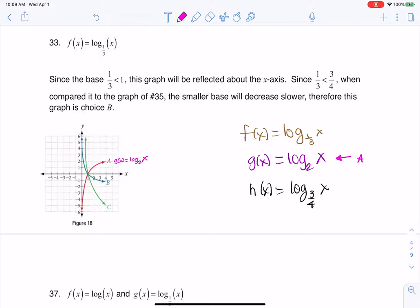And then we have two other graphs where we have a base of one-third and a base of three-fourths. So because those numbers are less than one, your graph's going to get reflected around the x-axis, and then it's going to be logarithmic decay, if you will, because we're going to have lower and lower y values.